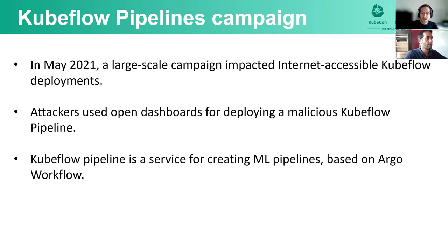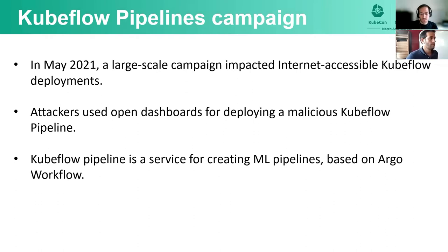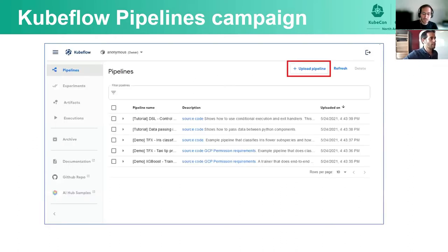Earlier this year, we saw a large-scale campaign that targeted internet-accessible Kubeflow workloads. The attackers used exposed dashboards for deploying a malicious pipeline. A Kubeflow pipeline is a service of Kubeflow that allows users to create machine learning pipelines, which is based on Argo Workflow. By using the dashboard, you can simply create a new pipeline — and that's what the attackers did.